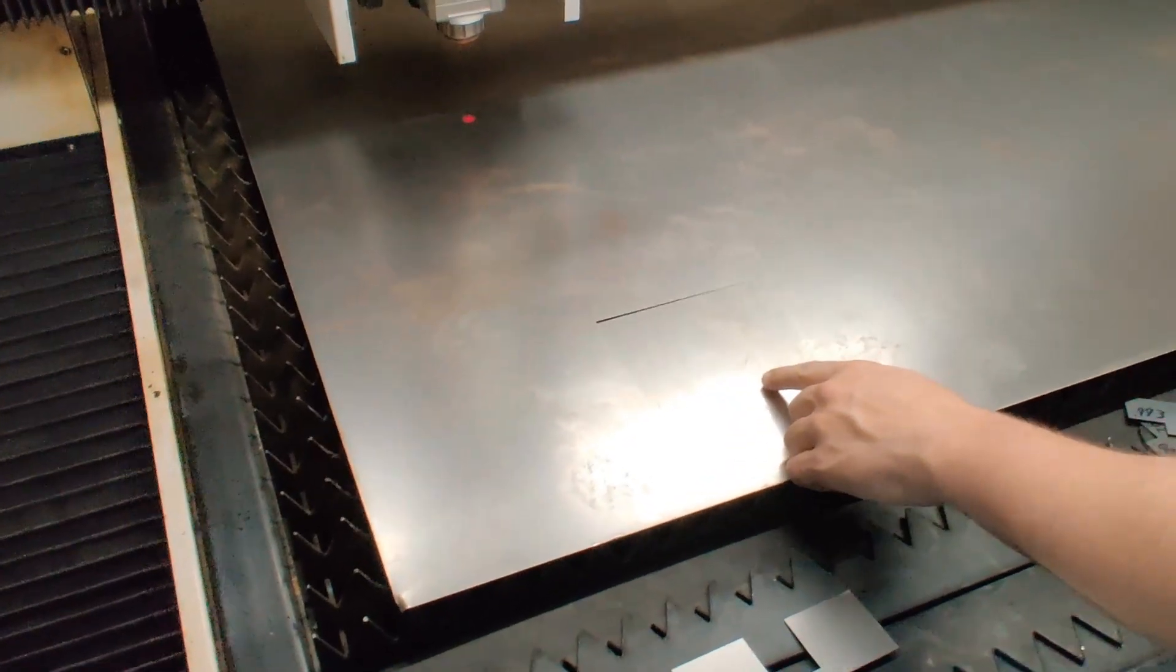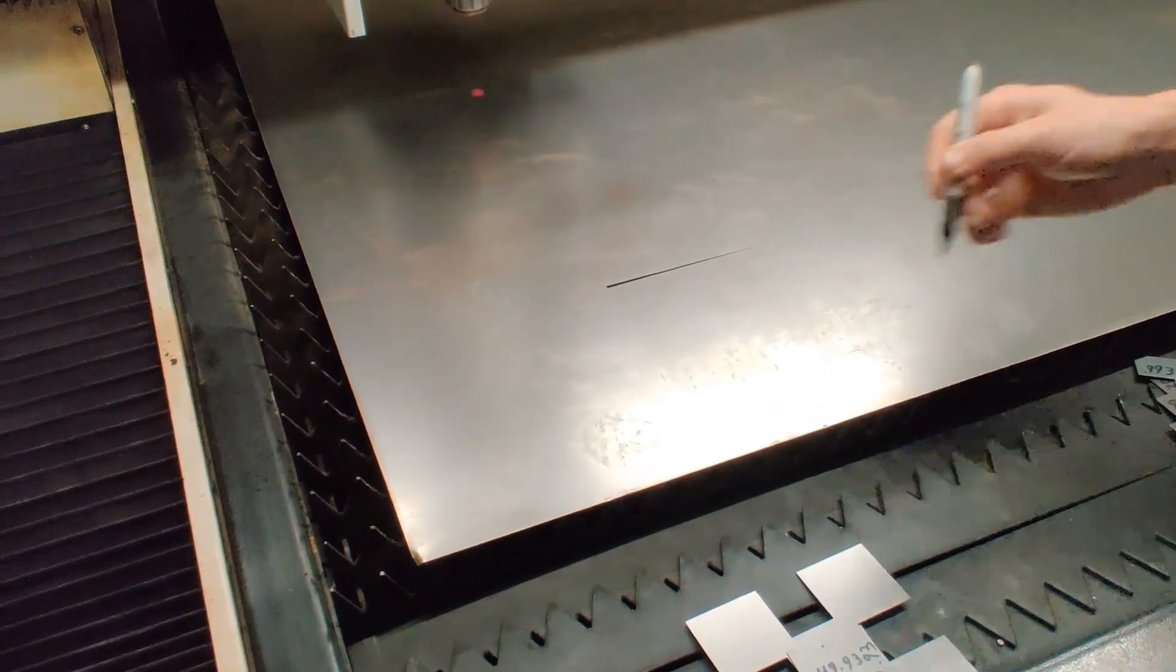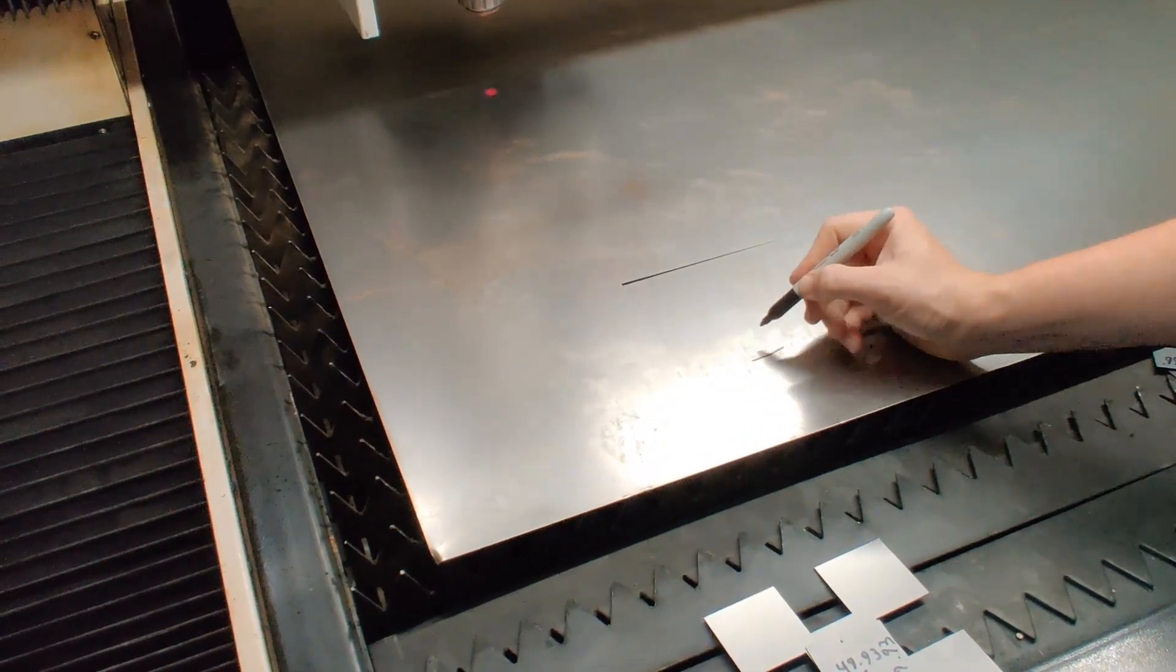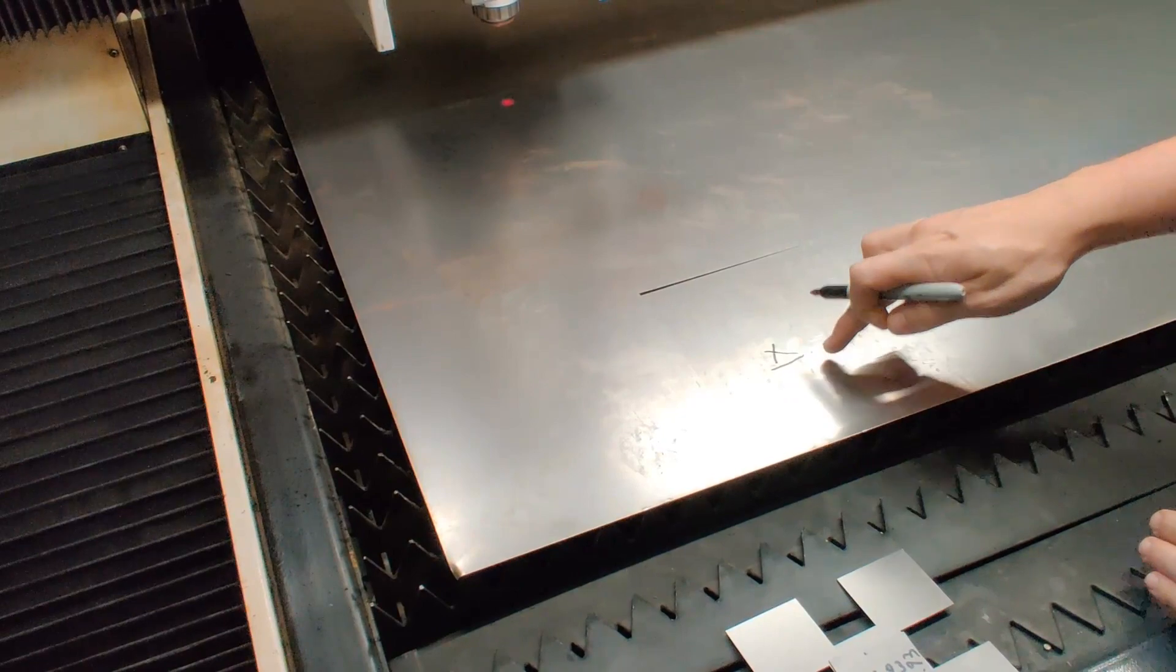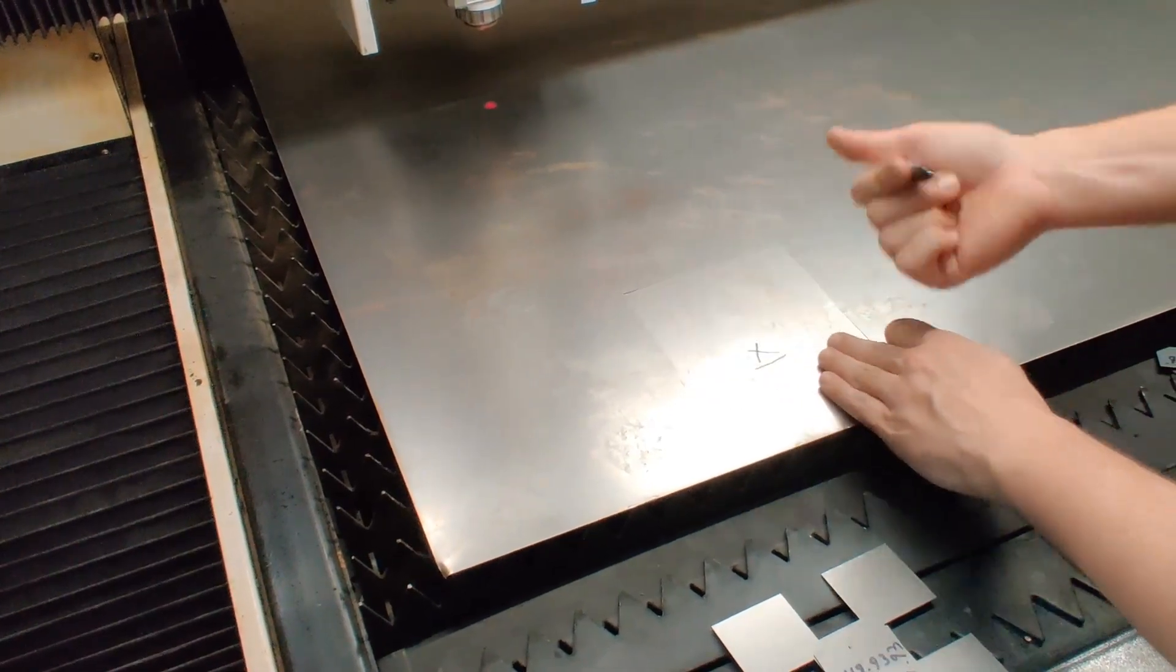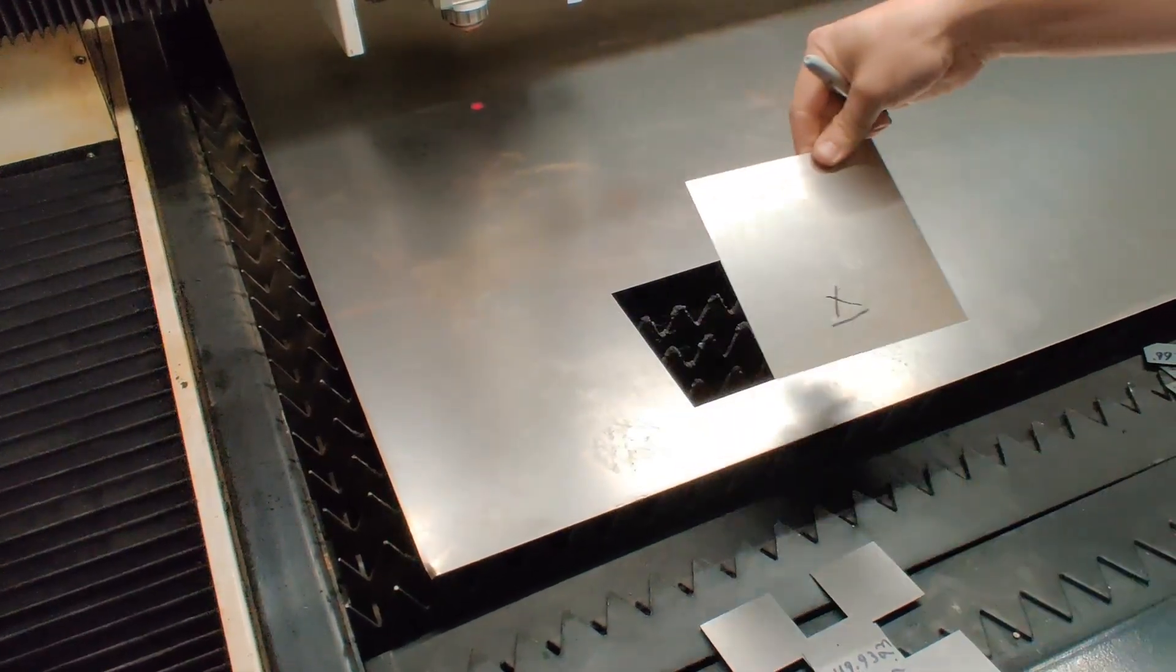Before you remove any part from the machine when you're doing calibration, mark what direction is the x-axis and also by putting a sharpie mark on it you're also going to mark what side's up. Might come in handy later.